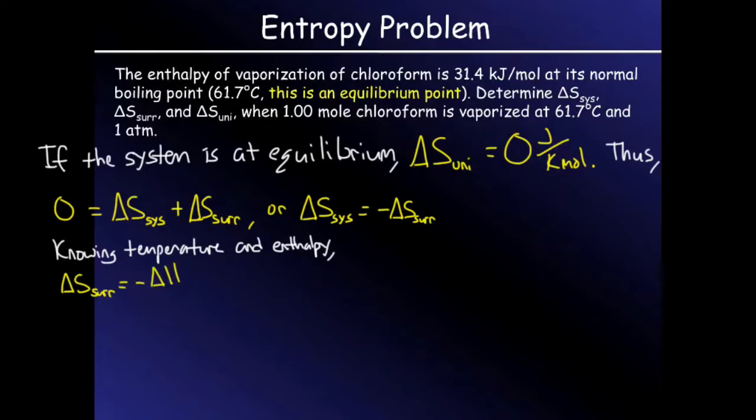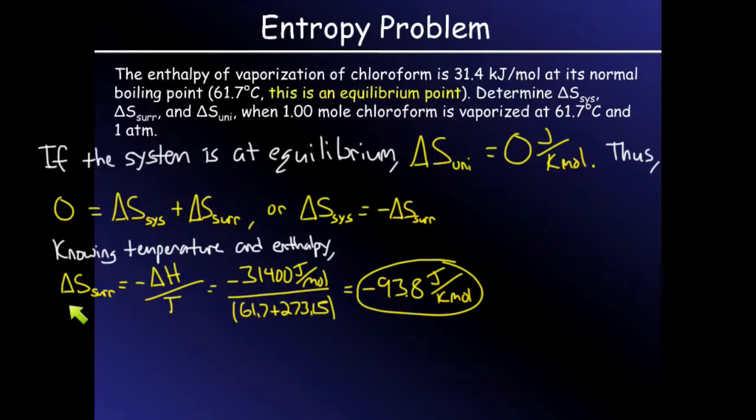Knowing the temperature and enthalpy, we can solve for delta S surroundings. Remembering that delta S has units of joules, so we need to convert our kilojoule values to joules and convert our temperature in Celsius to kelvin, and we get a negative delta S surroundings of 93.8 joules per kelvin mole.